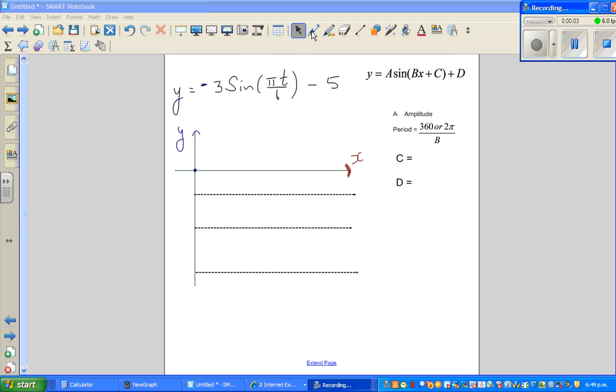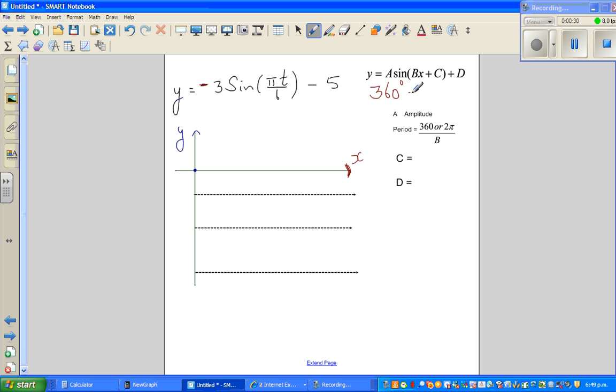Let us see how to graph this equation: y equals minus 3 sine pi t over 6 minus 5. Whenever you have pi, they're asking you to draw in radians. Regarding radians, you should know this rule: 360 degrees is 2 pi radians.